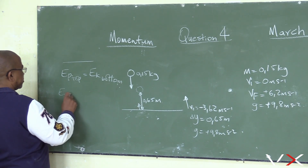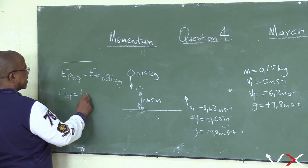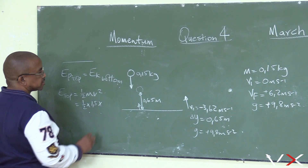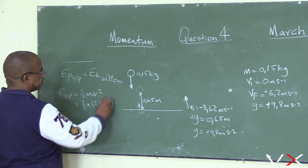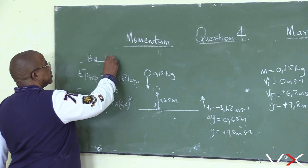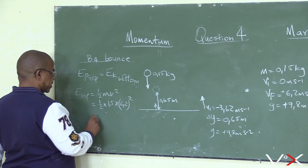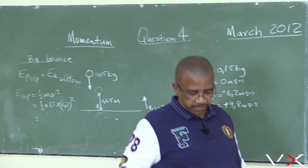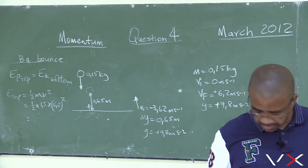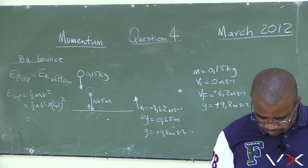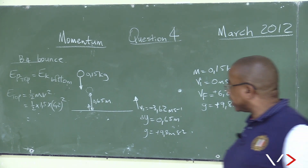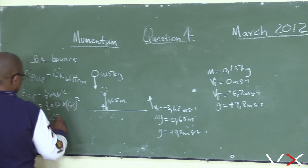Kinetic energy is one half m v squared. Using the velocity before the bounce: one half times 0.15 times 6.2 squared. So 6.2 squared times 0.75 — wait, half of 0.15 is 0.075. The kinetic energy calculates to 28.83 Joules.